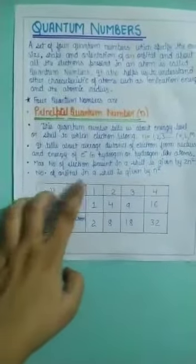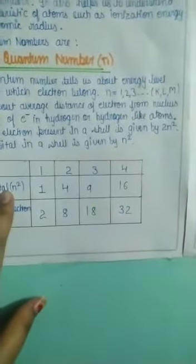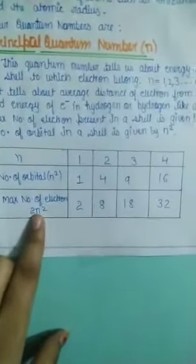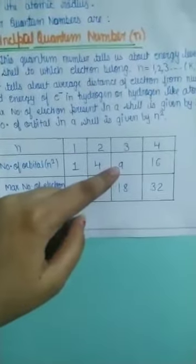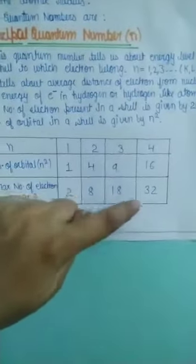The number of orbitals in a shell is n². So if n is 1, the number of orbitals is 1 and the maximum number of electrons is 2. For the 2nd shell, we have 4 orbitals and 8 electrons. Similarly for n=3, we have 9 orbitals and 18 electrons, and for n=4, we have 16 orbitals and 32 electrons.